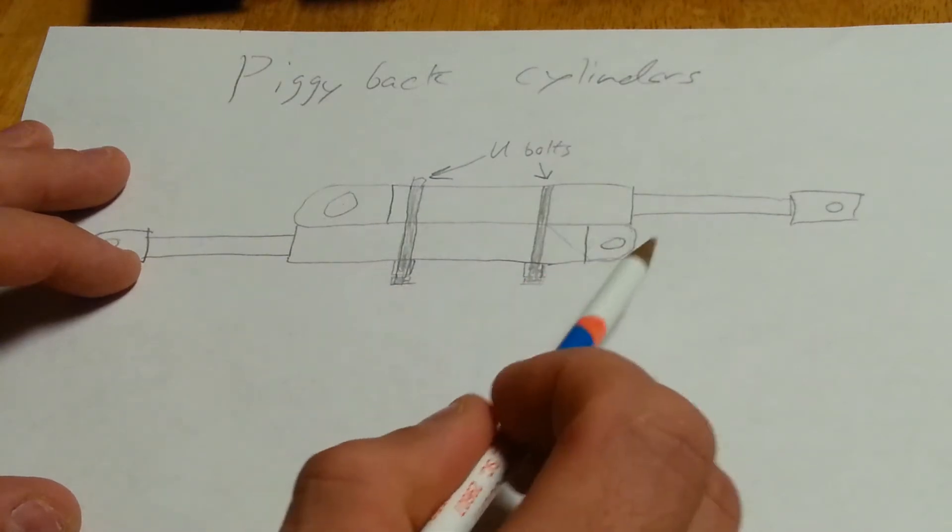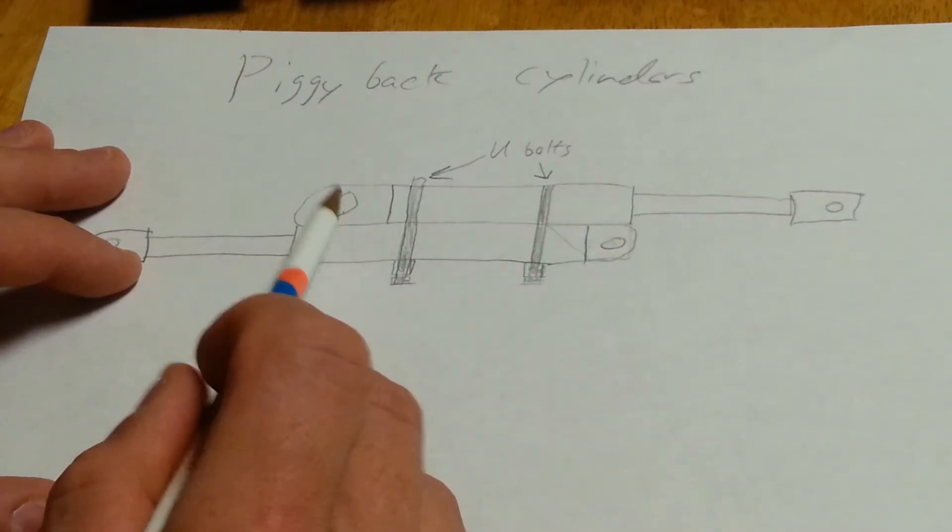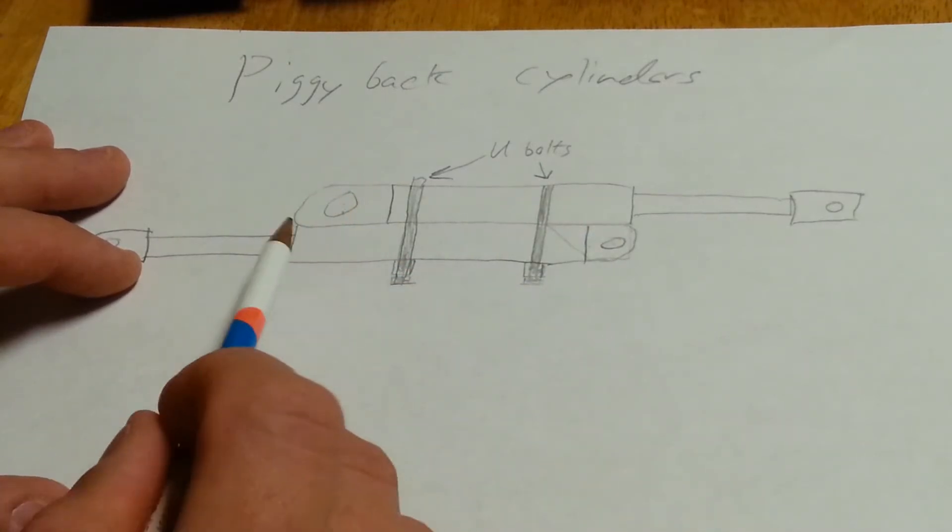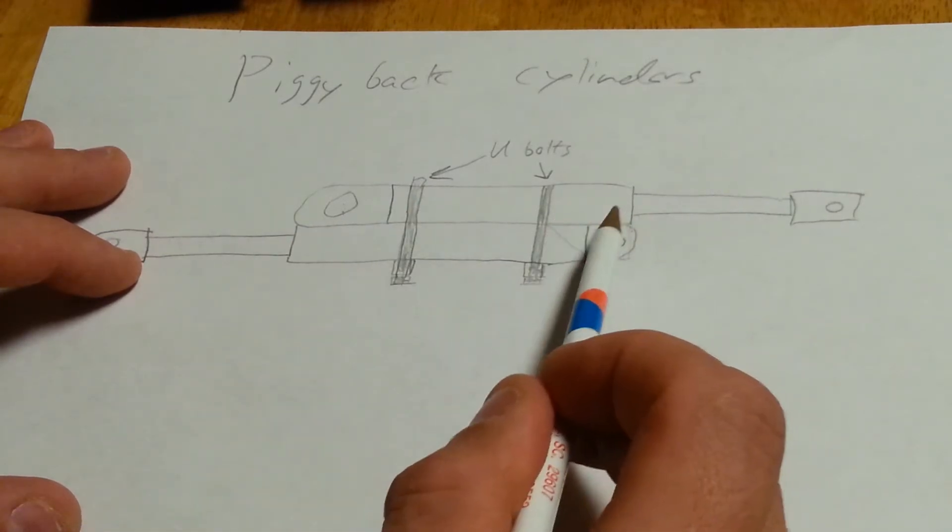One here, one on the opposite side for that pin to go through, and one here, one on the opposite side for that pin to go through. And then you want to weld on both sides of each plate to your rod.